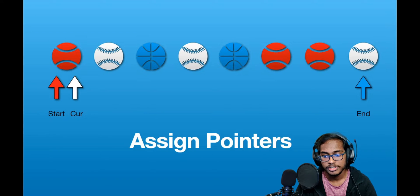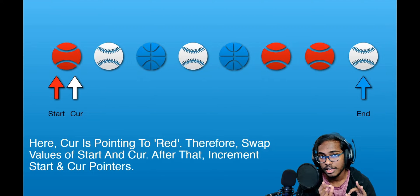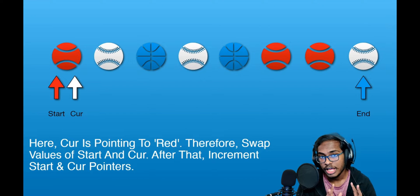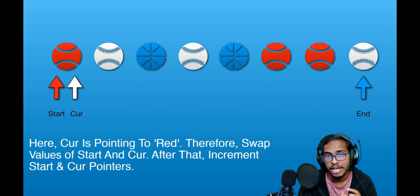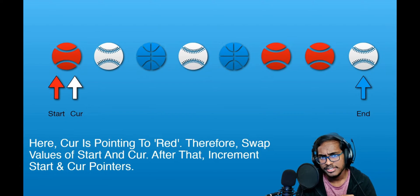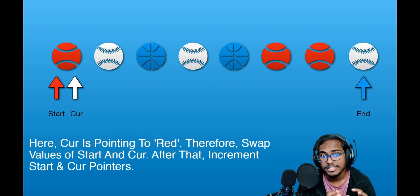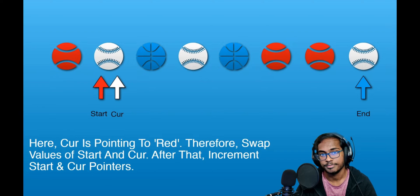Now I'm going to check what ball cut currently points to. In this case, cut is pointing to red. According to the algorithm, red balls are supposed to be on the left side of the array, so we swap the balls at start and cut. But here, start and cut both point to the same ball, so there's no use swapping. We skip that step and increment both start and cut pointers.